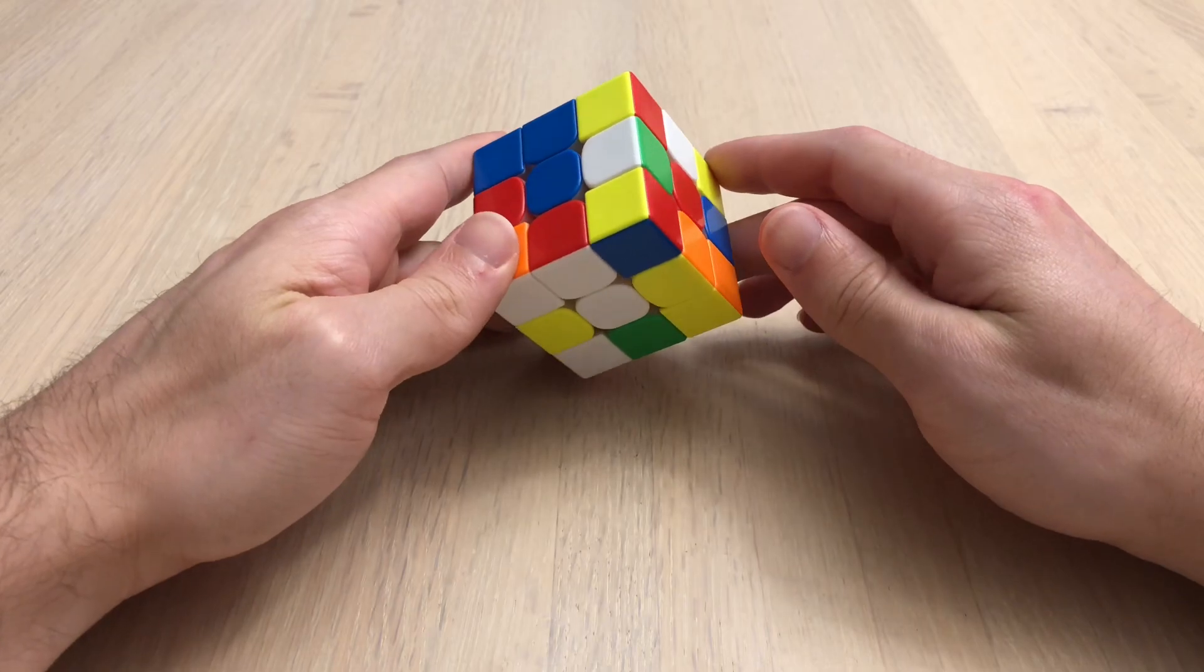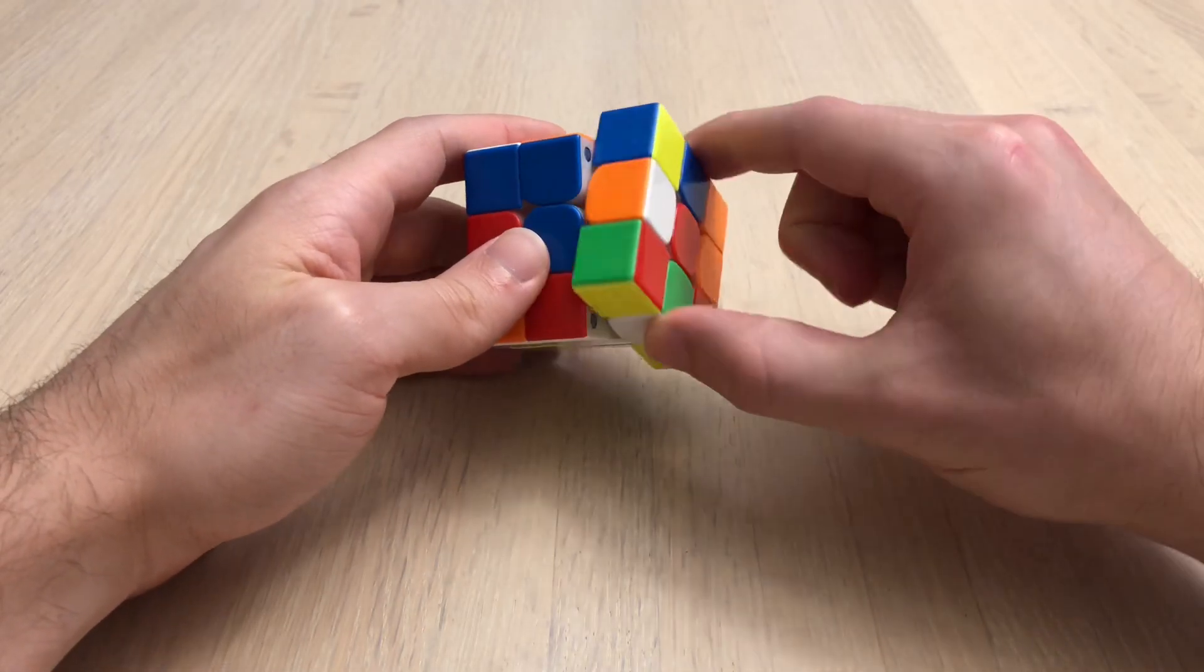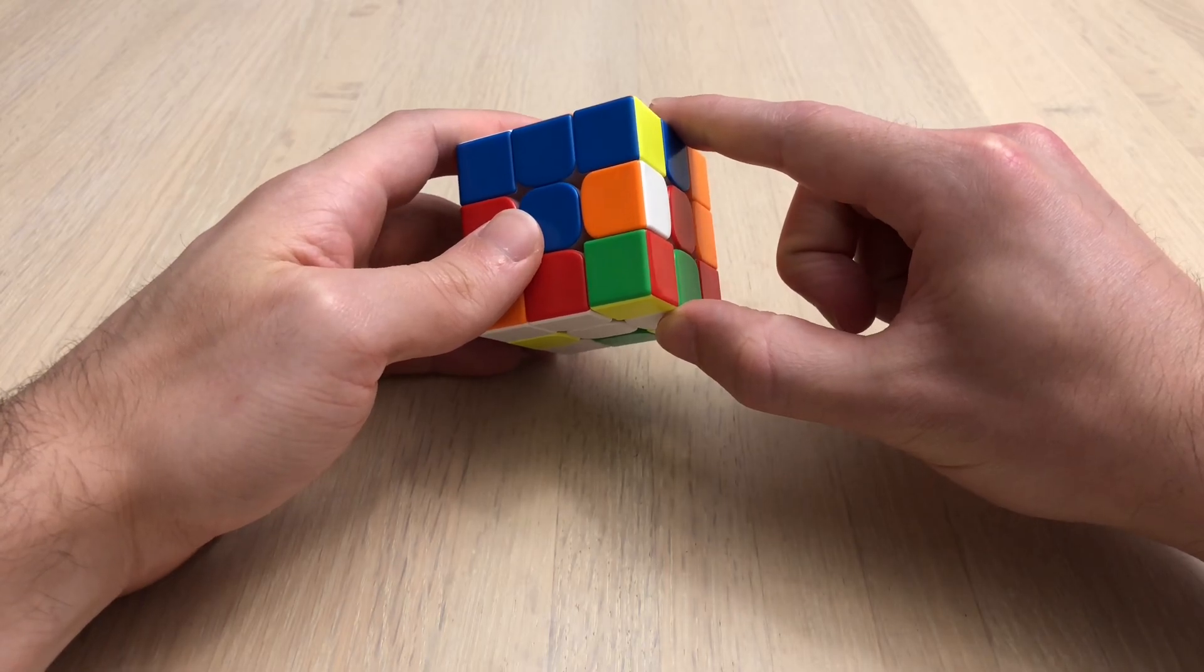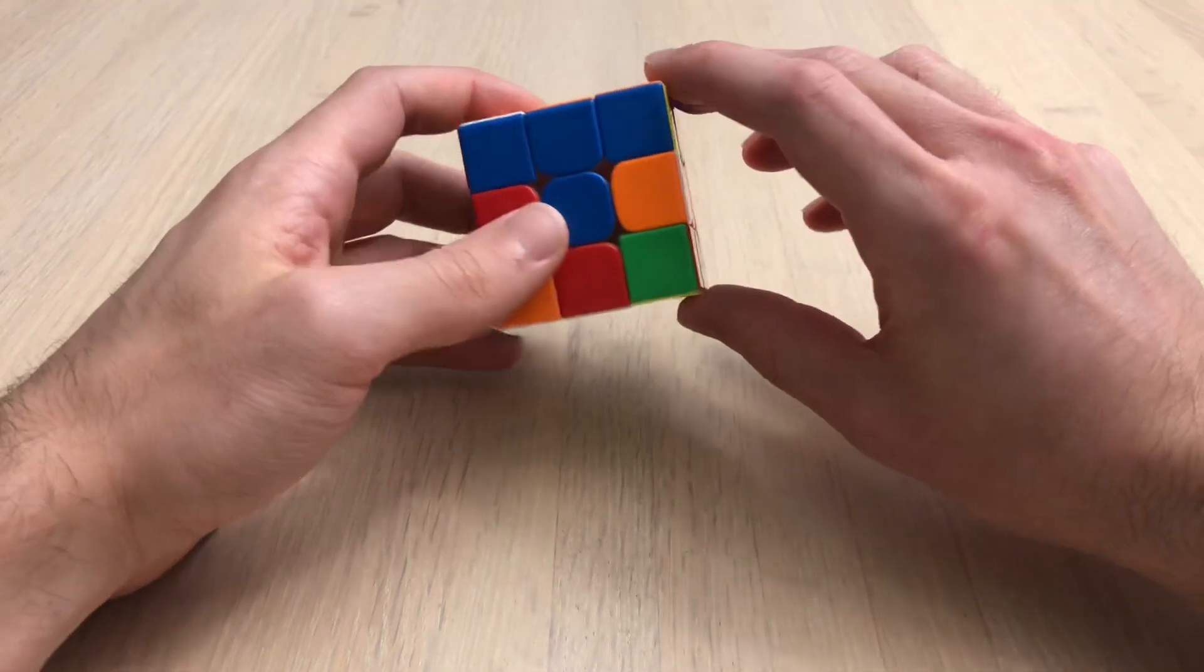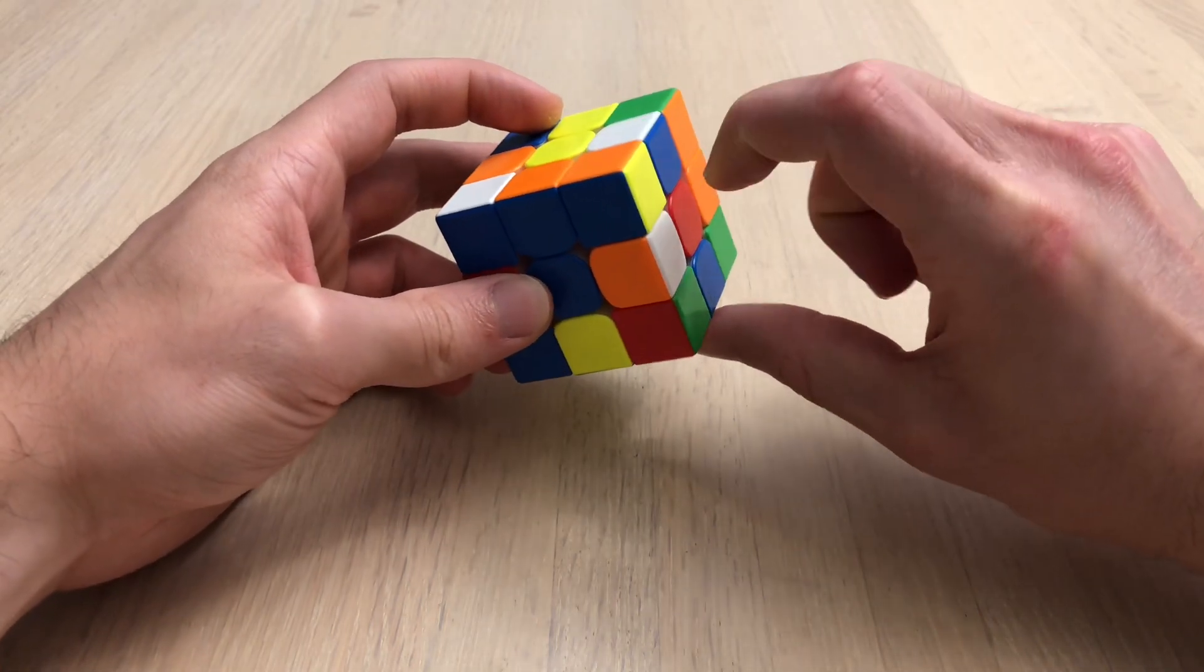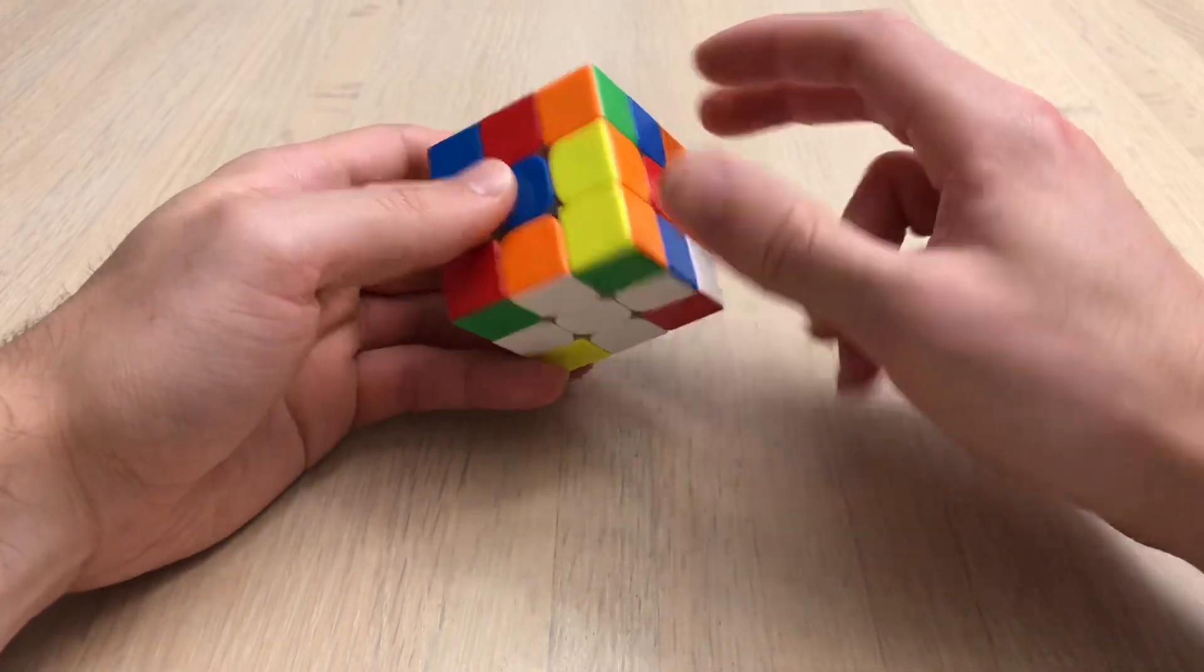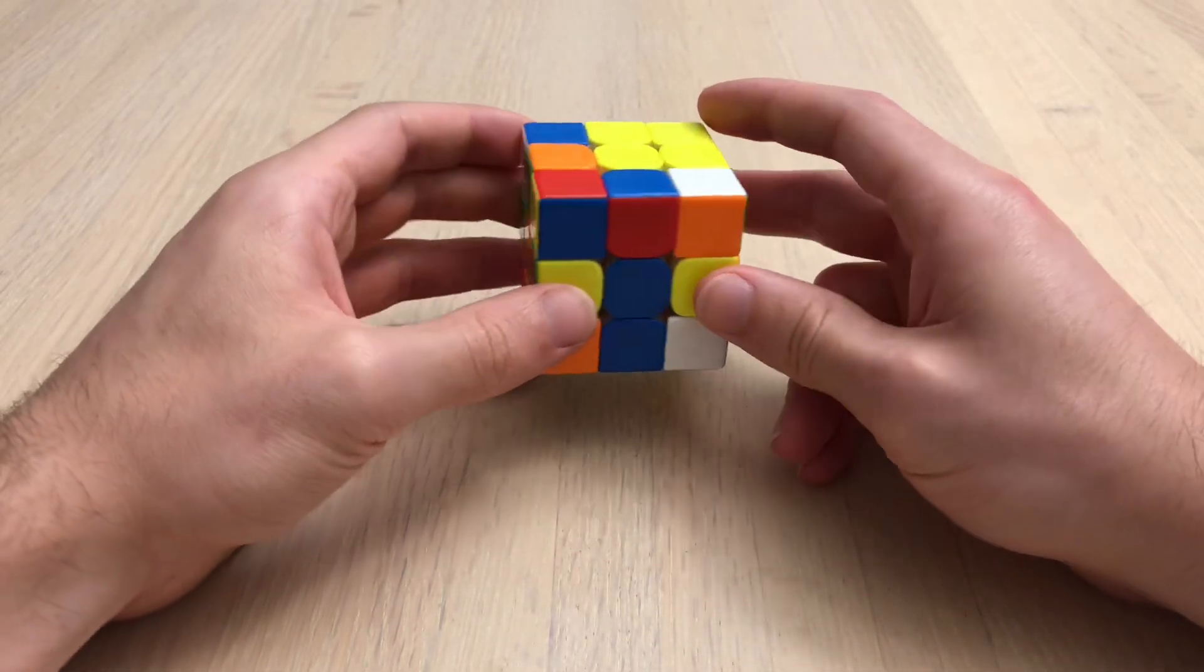Seventh scramble. I'm going to bring this green down so it's in place relative. And then D2, and then these two are nicely in place. And then D' to finish the cross.